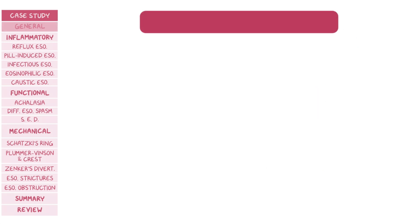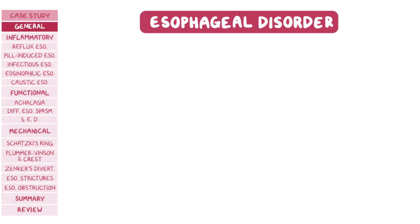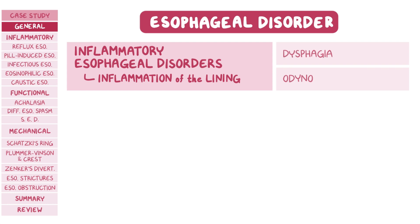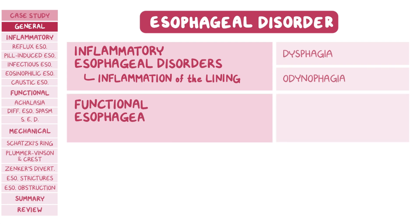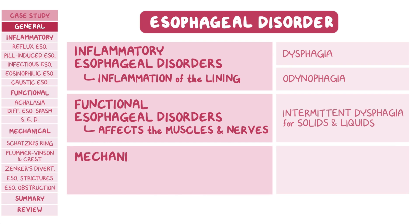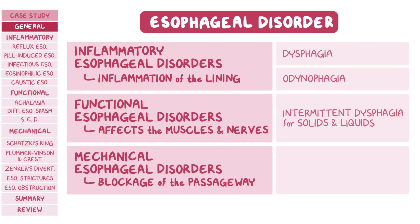Both Ravi and Frank have some form of esophageal disorder. Esophageal disorders can be subdivided into inflammatory esophageal disorders, or esophagitis, characterized by inflammation of the esophageal lining along with dysphagia and odynophagia; functional esophageal disorders, which affect the muscles and nerves controlling motility and cause intermittent dysphagia for solids and liquids; and mechanical esophageal disorders, characterized by blockage of the passageway, typically causing progressive dysphagia for solids.